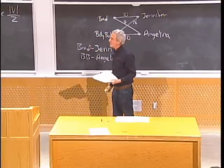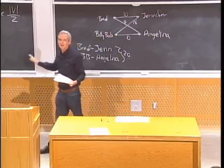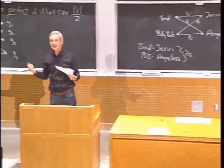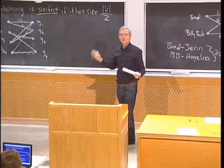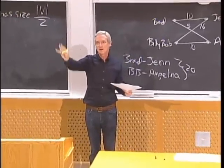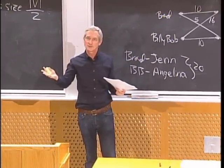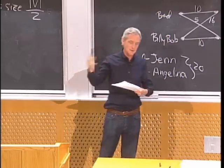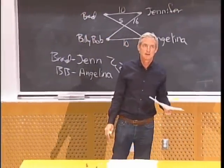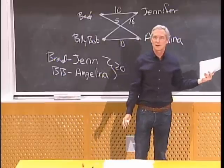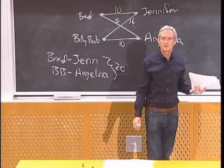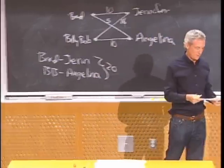Technically a matching is a subgraph, so it has nodes and edges. But you'll often see it referred to as a collection of edges that don't share any nodes. The goal is to find a stable, perfect matching — get everybody married up and make it stable.